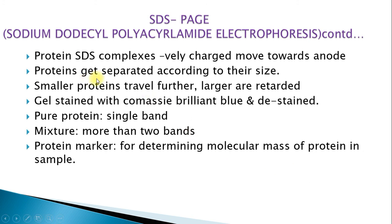When the protein molecules reach the separating gel, they separate according to their size — smaller protein molecules travel further while larger ones are retarded. After electrophoresis, the gel is stained with Coomassie Brilliant Blue for one hour and de-stained overnight. If the protein is pure, a single band is seen; if it is a mixture, more than two bands appear. A protein marker is also run alongside to determine the molecular mass of the proteins in the sample.